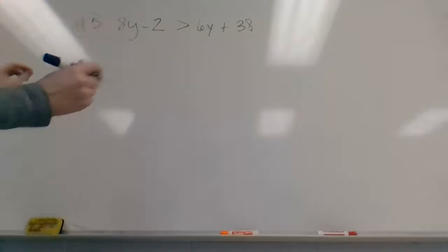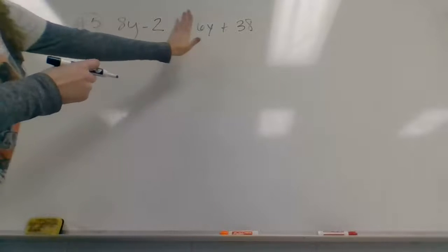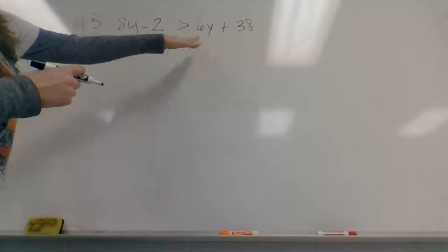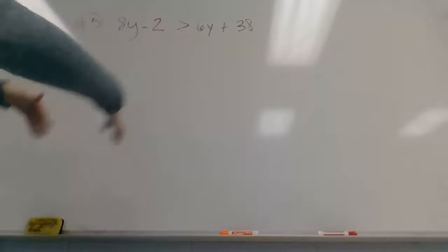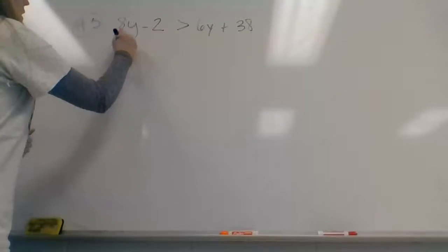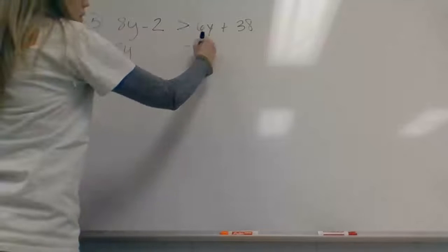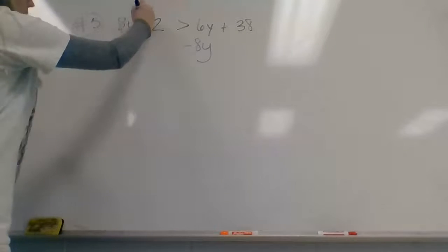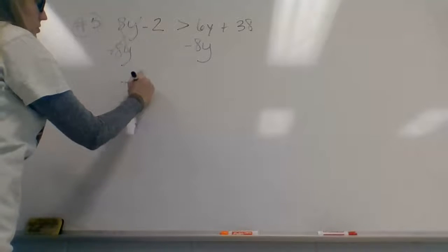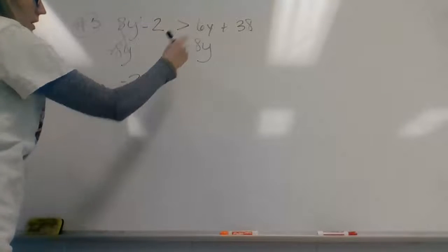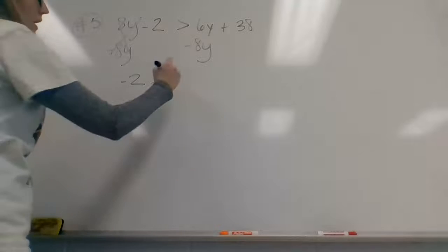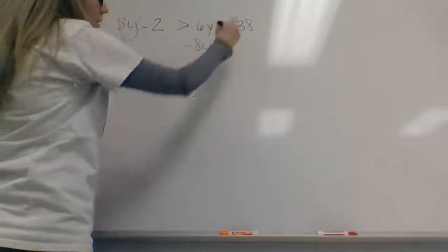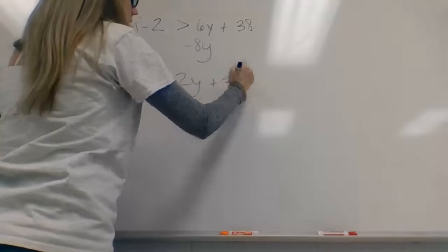I'm going to start by combining my variables. I have an 8y here and I have a 6y here. I usually start with the left side. So I'm going to move this 8y in order to get this canceled out and be left with just negative 2 here. This is saying greater than. So 6y minus 8y is going to give me a negative 2y plus 38.